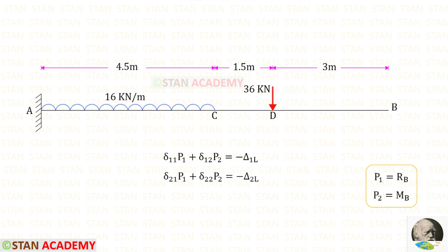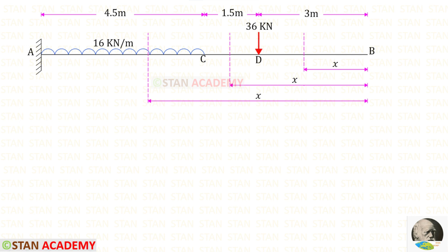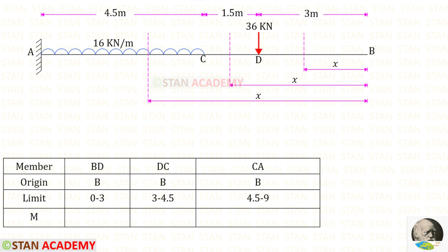We have to make sections. In this beam there are three different parts: A to C, C to D, and D to B. So we have to make three sections — one in AC, one in CD, and one in DB. All sections are made at a distance of X from point B.